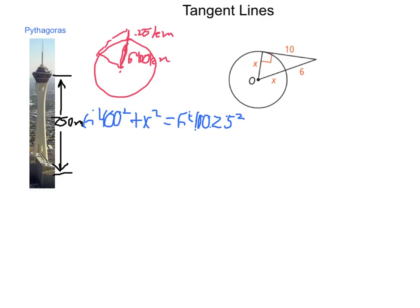Now going through and running some computations on this, what we have is x squared is equal to 6,400 and a quarter squared minus 6,400 squared.